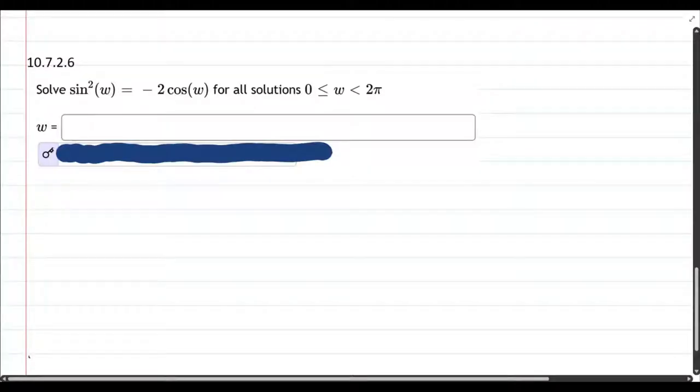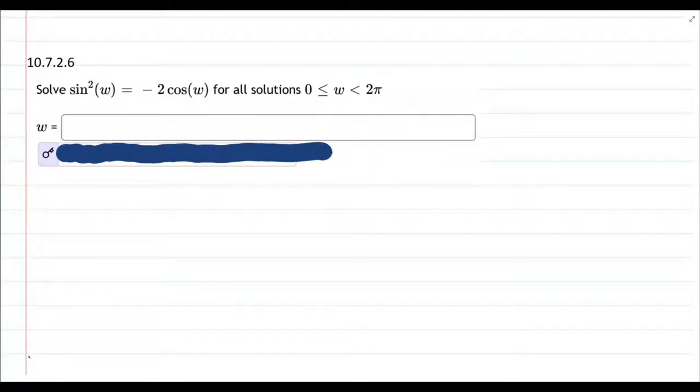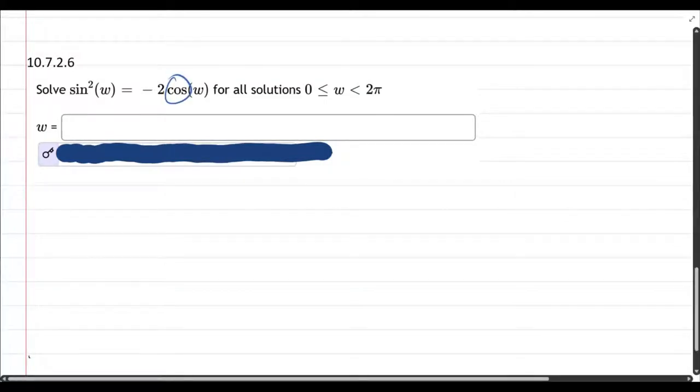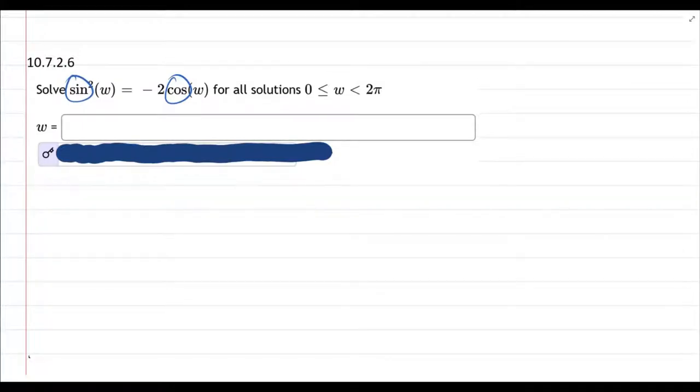This question is solve a trig equation. Now there's one major problem with this and that we have a cosine and a sine function, which is not good. We'd like them all to be cosine or all to be sine. So which one of these should we convert to the other one?